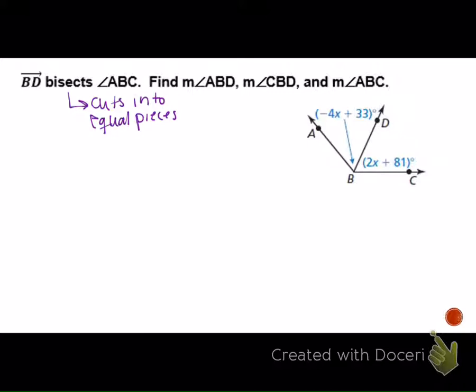BD bisects angle ABC. What do you know if BD is bisecting angle ABC? Kylie? It's cutting it in half. And what do you know about those pieces? Cuts into equal pieces. So we know that this angle is the same as this angle. That's what those lines mean. When two things are the same in math, what can we do? Set them equal to each other. Morgan, what would my equation look like? Negative 4x plus 33 equals 2x plus 81.